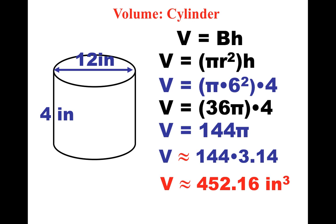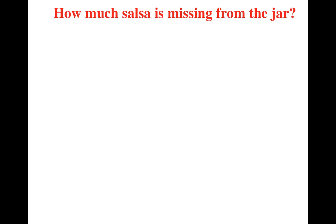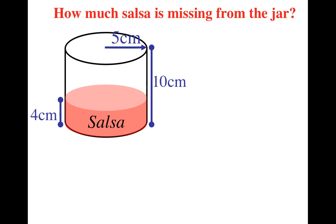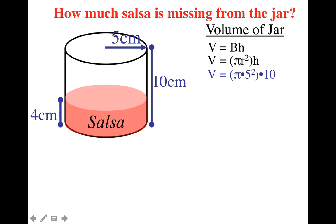All right, so we can move on to some real life problems. Let's say you had some salsa. How much salsa is missing from the jar? How much salsa did your brother eat? All right, what we have to do here is find the volume of the jar. Step one, write formula. Step two, plug in numbers. Notice five is my radius and 10 is my height of the entire jar. And step three, get answer.